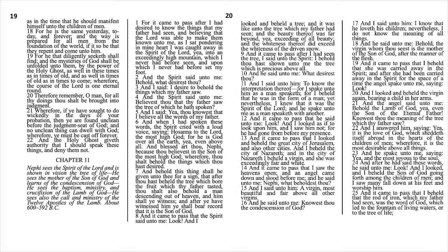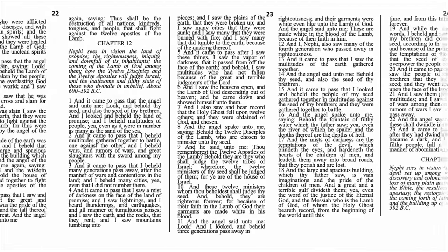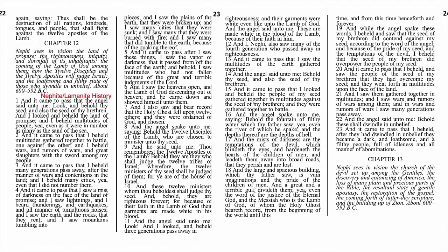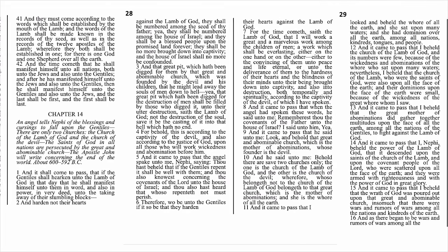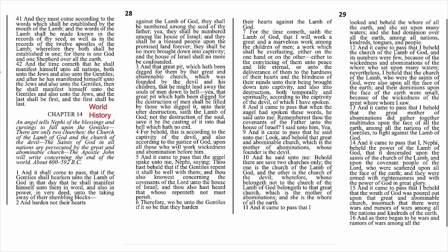Do you remember how the title page told us the Book of Mormon was written to those three specific groups? I invite you to take out a pen or pencil and at the chapter heading of the following chapters make these labels: 1 Nephi 11 — Jewish history. 1 Nephi 12 — Nephite-Lamanite history. 1 Nephi 13 — Gentile-American history. 1 Nephi 14 — world history. To Nephi this is the future, but the Book of Mormon was written for our day, and to us as the modern reader we're going to be shown many significant spiritual events of the past.